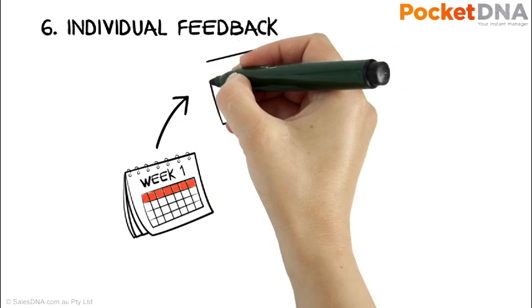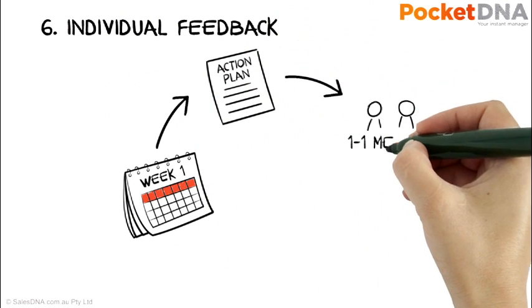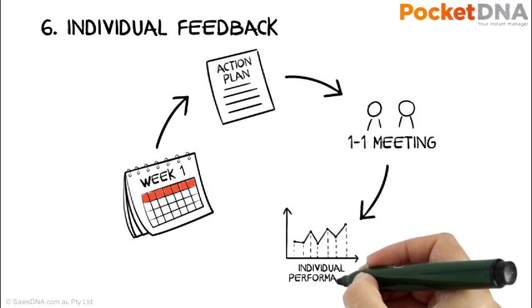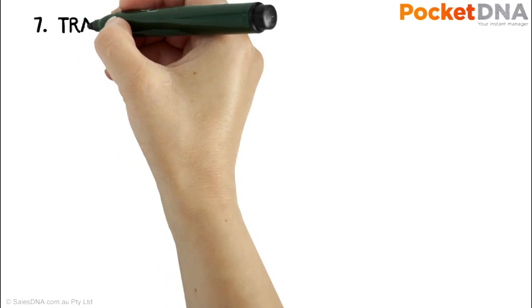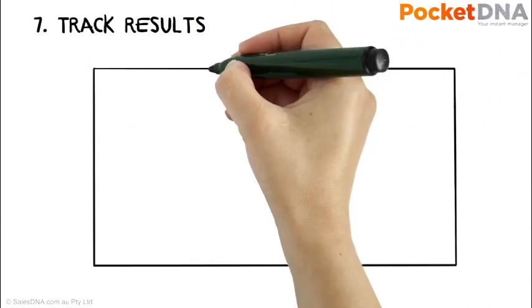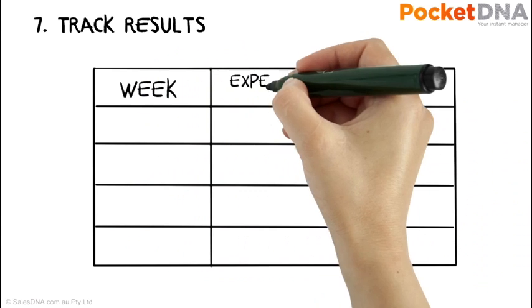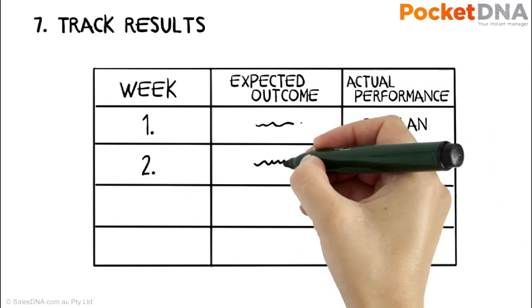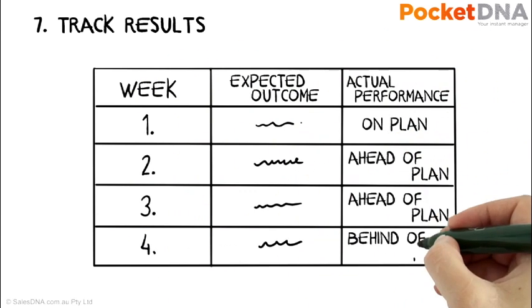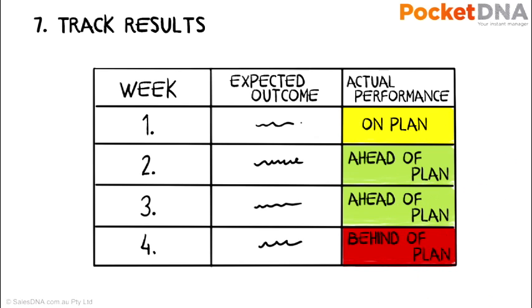Second, have weekly one-on-ones with each team member. This focuses attention on the individual's performance. In both cases, make reference to the vision and the goals, and most importantly, talk about actual performance against plan. Are you on track, ahead of, or behind plan?